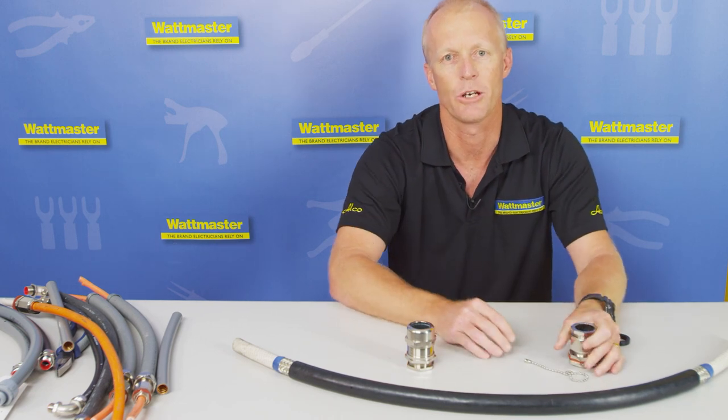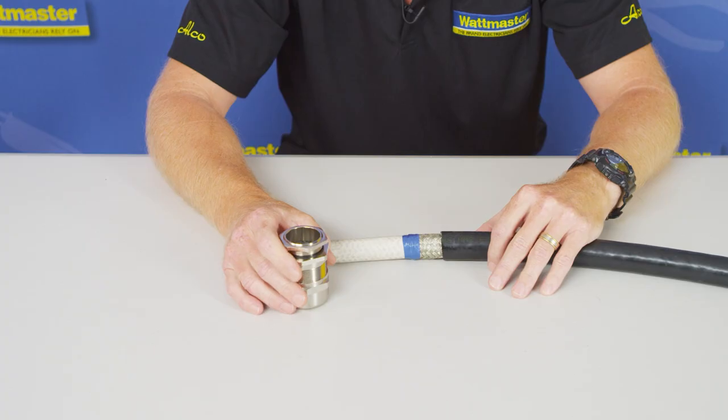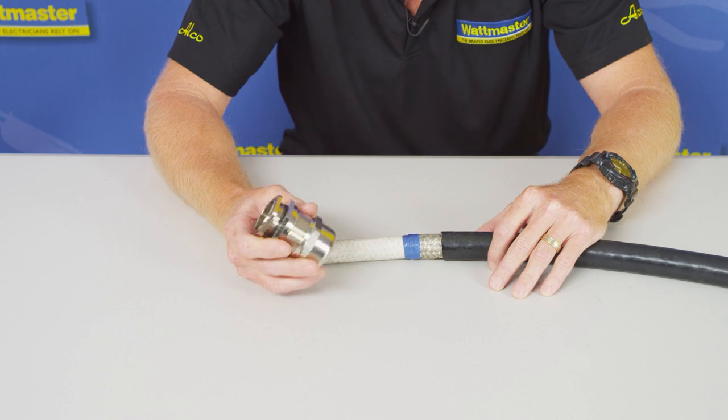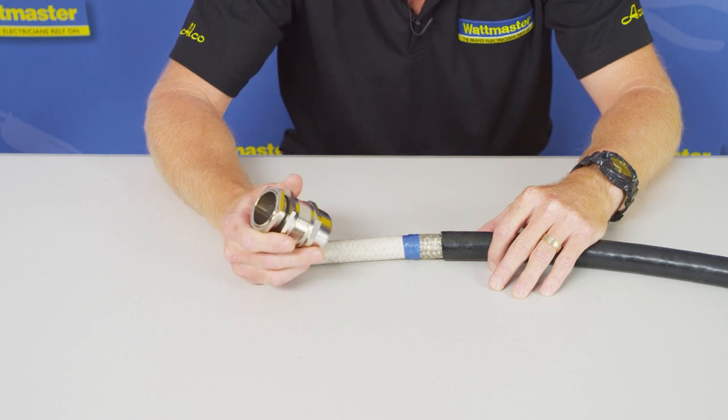This can terminate both the braided and the taped cable. When terminating the VSD cable, the whole point of the procedure is to get good 360 degree contact onto the braid.